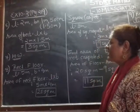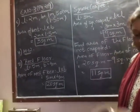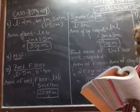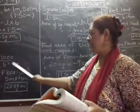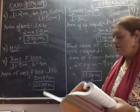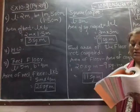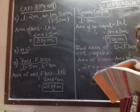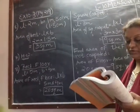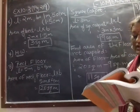The answer is 3 square meters. Question 7 is your homework. Now question number 8: a floor is 5 meters long and 4 meters wide, and a square carpet of size 3 meters is laid on the floor. Find the area of the floor that is not carpeted.